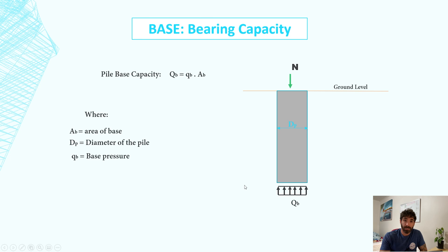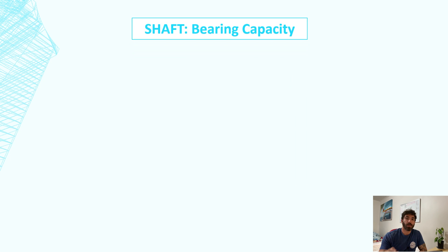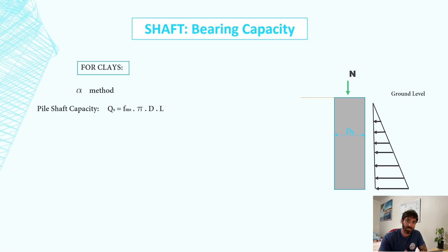There are multiple ways to calculate the bearing capacity of the shaft. The one I use is the alpha method for clays and beta method for sands. The pile shaft capacity for the alpha method is given by the average skin friction times π times the diameter times the length. f_ms is equal to α times the undrained cohesion.